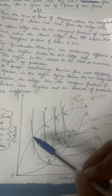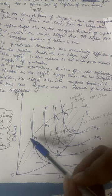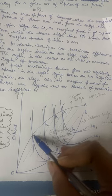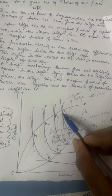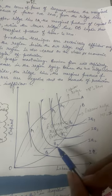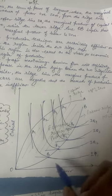Beyond a certain point, if you keep on increasing the factors of production, the output does not increase. These are the points where your output does not increase whether you increase the capital or the labor.